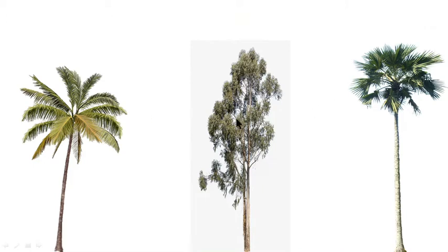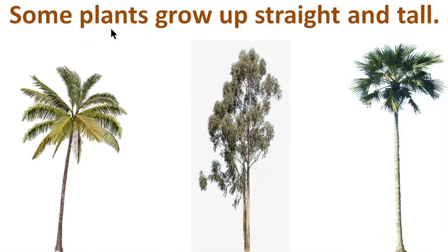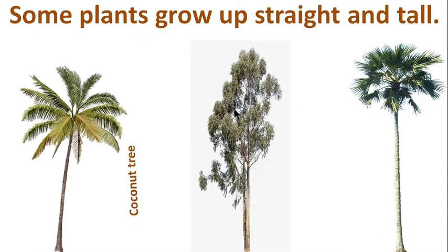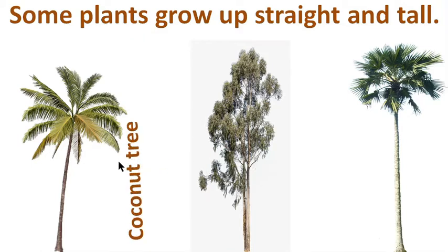In this picture, we can see three trees. Some plants grow up straight and tall. These trees are very tall. This is a coconut tree — a very tall tree.